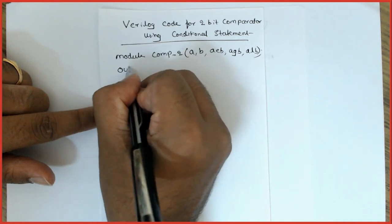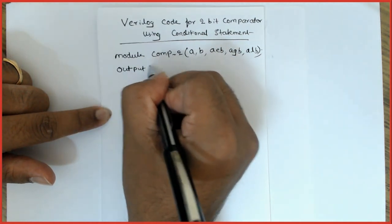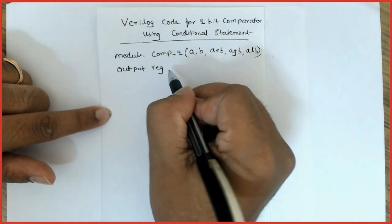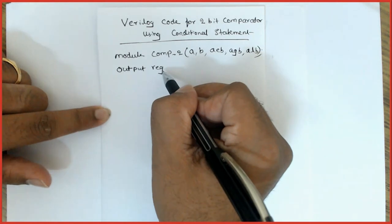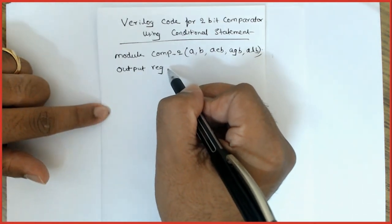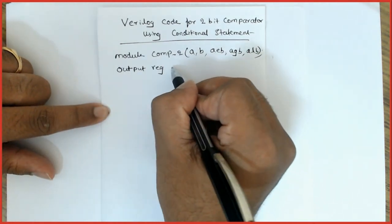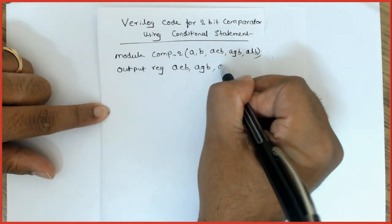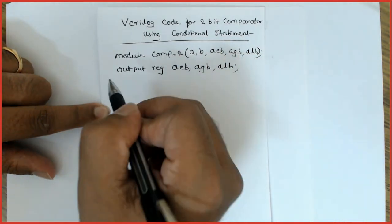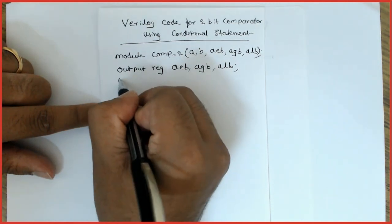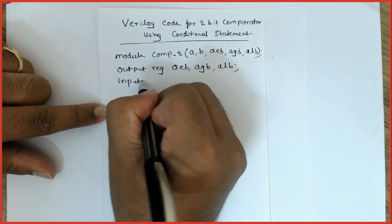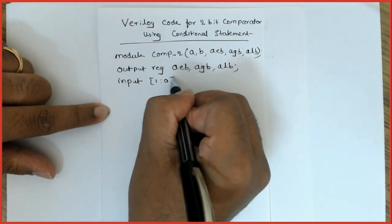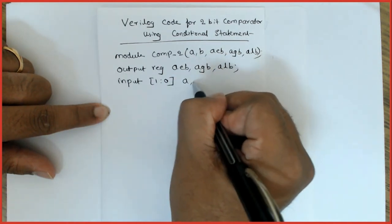I declare the outputs. Since I'm using the output inside the always block, I declare the output also as register: aeb, agb, alb. Then input a and b are 2 bits, so I'm taking it as a vector [1:0] a, b.